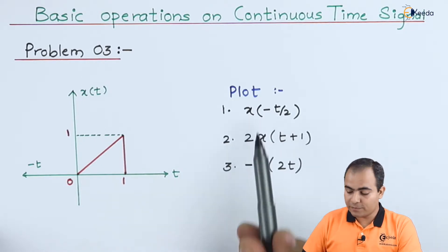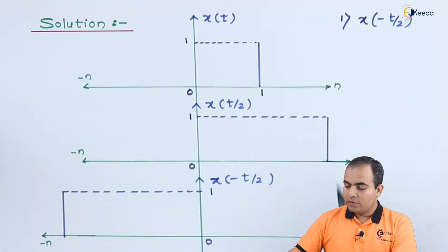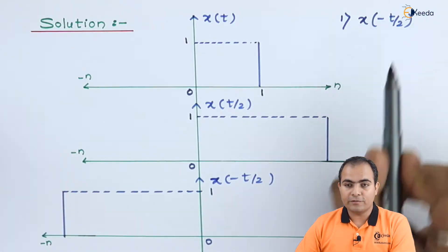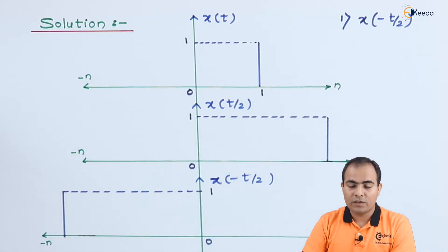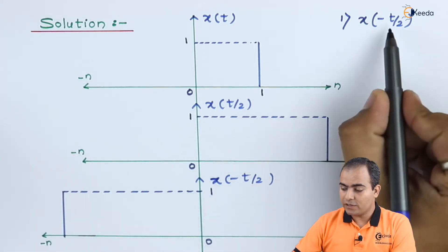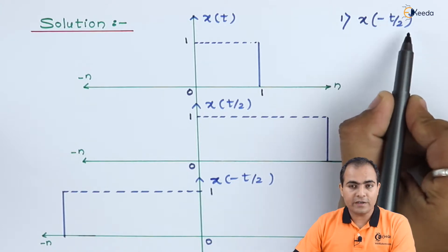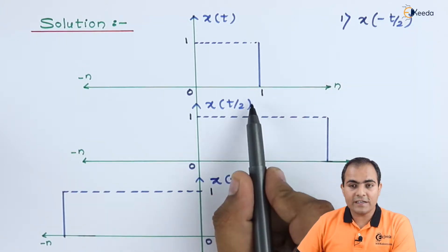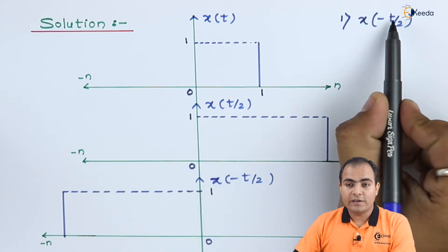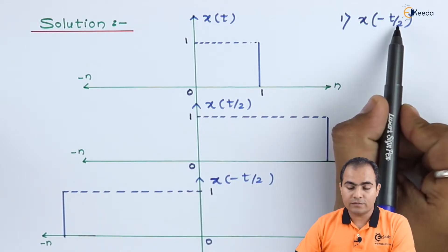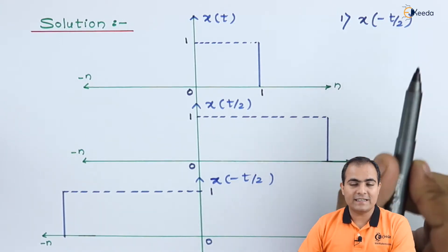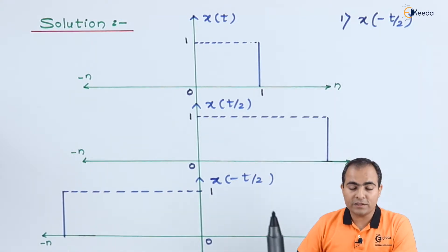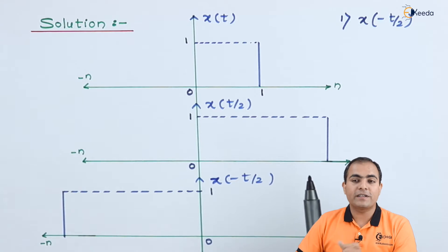Now we will solve the first part: x of minus t by 2. Here the time is not delayed, so you can apply any property first. Here we have minus t divided by 2. I am going to use time scaling property first. Here t by 2 means the scaling factor alpha value is half. Since half is less than 1, we are going to expand the graph.